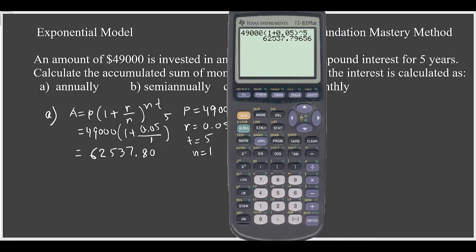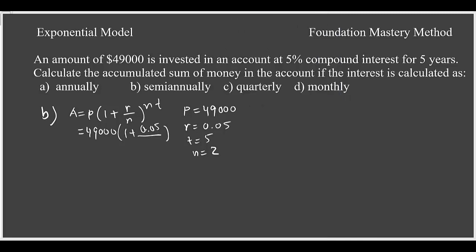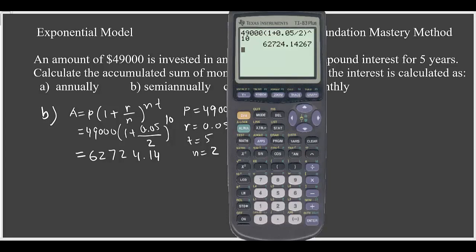We'll be writing now this one for semi-annually. My n is 2, so I put it 2 here, and t is 5. N is 2, that gives me 10 here. We plug this one in the calculator and see the answer. So now the calculation gives me: we have 49,000(1 + 0.05/2)^10. That gives me $62,724.14 rounded to two decimal places.